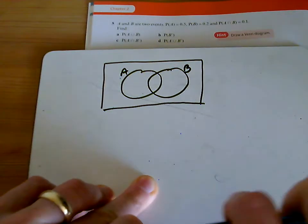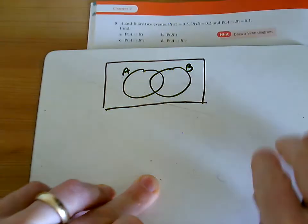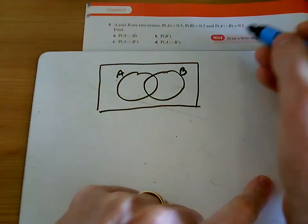Question 5. We've got a Venn diagram. Hint: draw a Venn diagram.